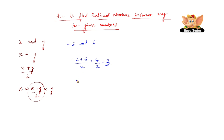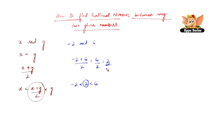We can also write: minus 2 is less than 2, and 2 is also less than 6, which clearly shows that 2 is in between minus 2 and 6. Therefore, 2 is one of the many rational numbers present in between minus 2 and 6.